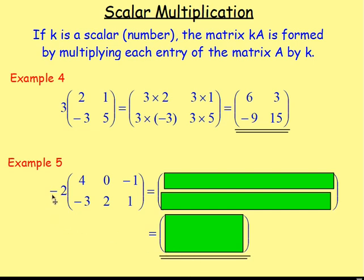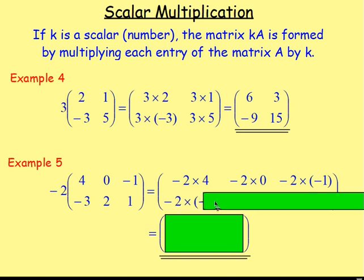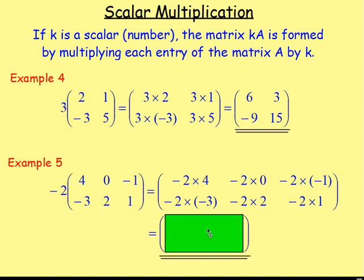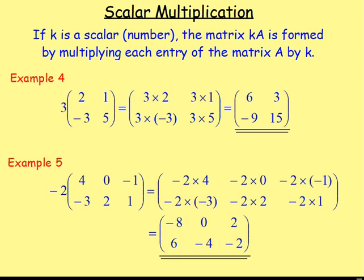Example 5: if we have negative 2 times this matrix with 4, 0, negative 1, negative 3, 2, and 1, we're going to multiply every single entry by negative 2. So the top row: negative 2 times 4, negative 2 times 0, and negative 2 times negative 1. And multiplying negative 2 by each entry in the second row: negative 2 times negative 3, negative 2 times 2, and negative 2 times 1. That gives negative 8, 0, and 2 for the top row, and 6, negative 4, and negative 2 for the bottom row.